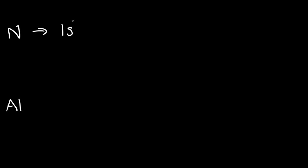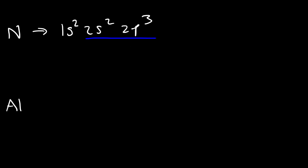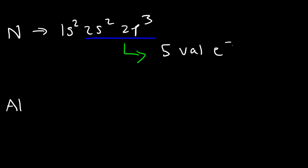Another way to identify the number of valence electrons is by writing the electron configuration. Let's write it for nitrogen and for aluminum. The electron configuration for nitrogen — I'm assuming you already know how to do this; if not, you can check out another video I have on YouTube — is 1s2, 2s2, 2p3. Notice the exponents add up to 7, because nitrogen has a total of 7 electrons. In the highest energy level, the second energy level, we have two sublevels: 2s and 2p. In the second energy level we have a total of 5 electrons, so those 5 are the 5 valence electrons. All the other electrons are known as core electrons, so nitrogen has two core electrons.